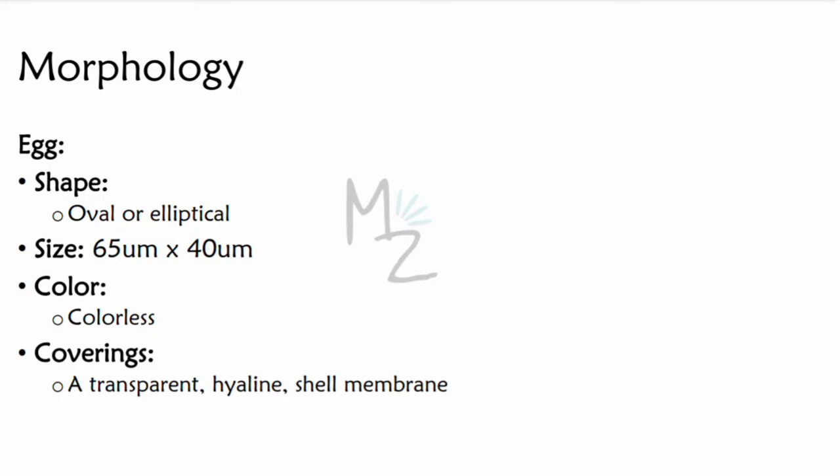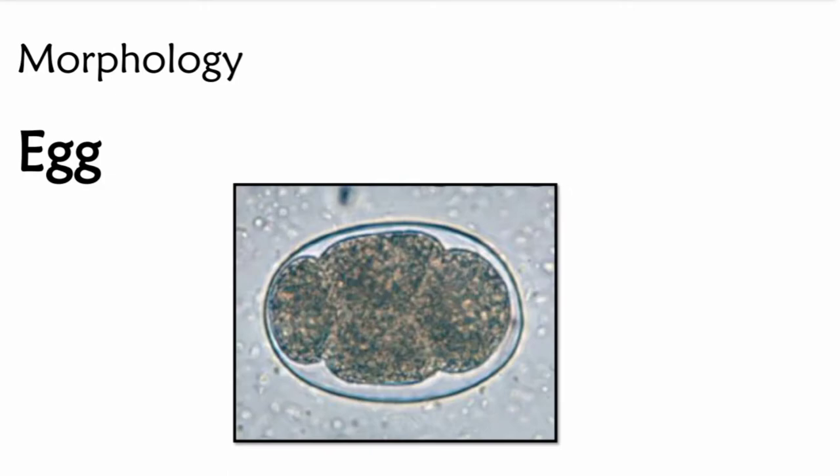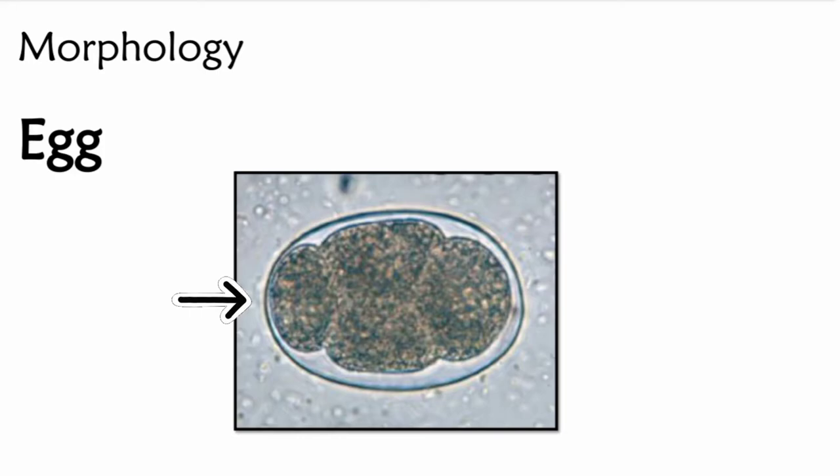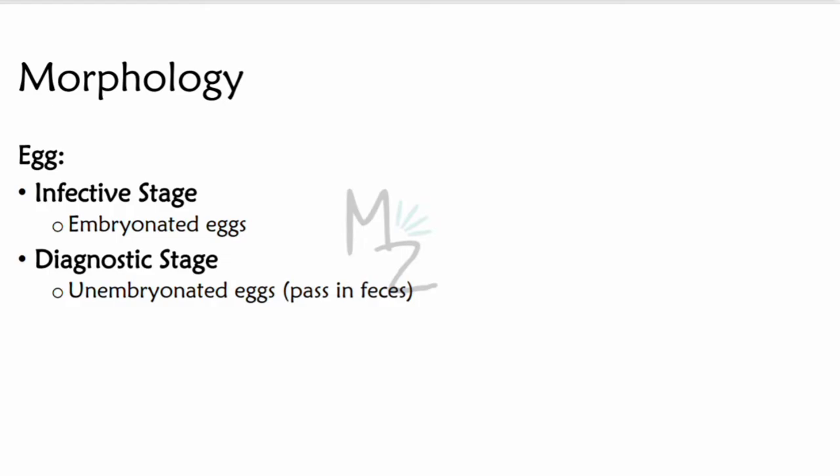Let's talk about the egg first. It is oval or elliptical in shape, 65 micrometers by 40 micrometers in size, and it is colorless. It has a transparent covering — the hyaline shell membrane. As you can see in this picture, it contains a segmented ovum, usually with four blastomeres when passed in feces. The egg has this segmented ovum, four blastomeres, and this transparent membrane. It is diagnostic when in its unembryonated stage — when eggs are passed in feces they are unembryonated, so when we get a fecal sample and visualize it under a microscope, we see the unembryonated eggs.